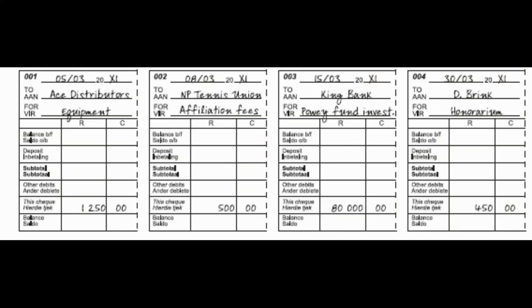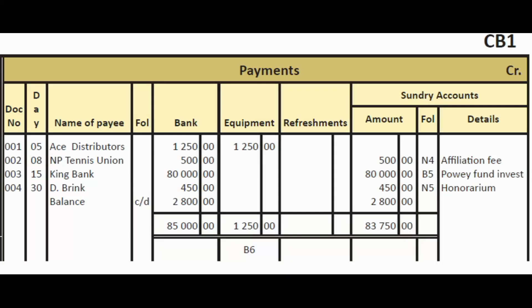Now we do the four payments on the credit side of the cash book under payments. The first payment is to Ace Distributors for equipment purchased — $1,250. We paid by cheque, so under the payee we write Ace Distributors, $1,250 in the bank column, and $1,250 in the equipment column.